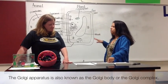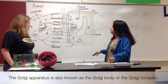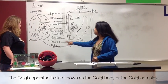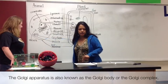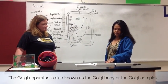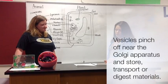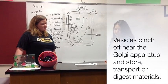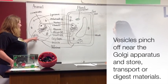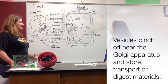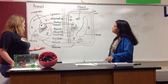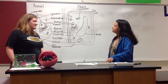Around the Golgi apparatus, you'll find something called a vesicle — visible in both the plant and animal cell. The vesicle stores, transports, or digests materials within the cell. If the Golgi complex is like the post office, the vesicles are kind of like the outgoing packages or mail trucks.